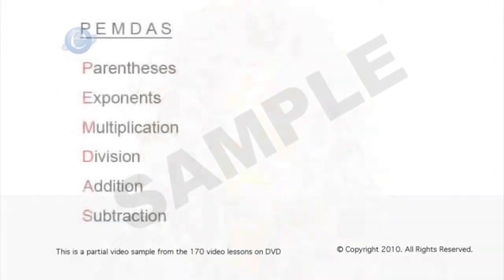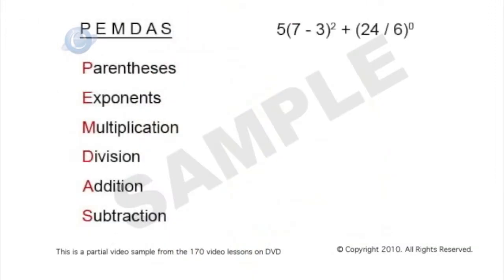Our example: 5 times the quantity 7 minus 3, squared, plus the quantity 24 divided by 6, raised to the 0 power.